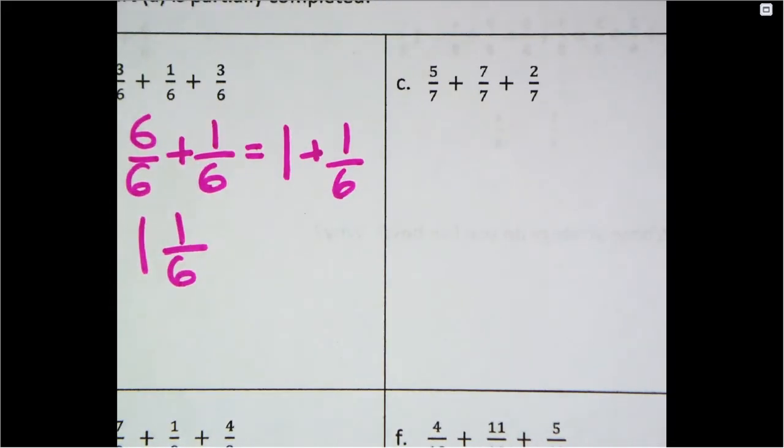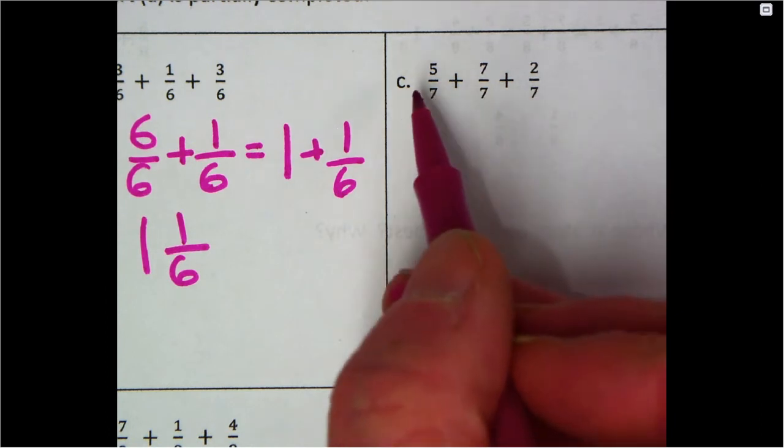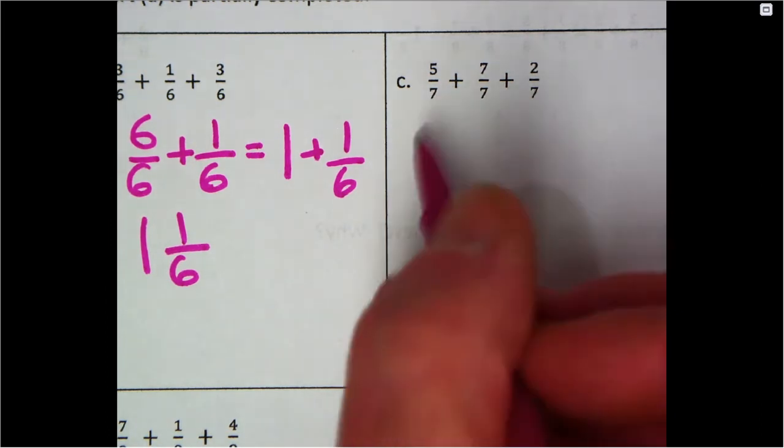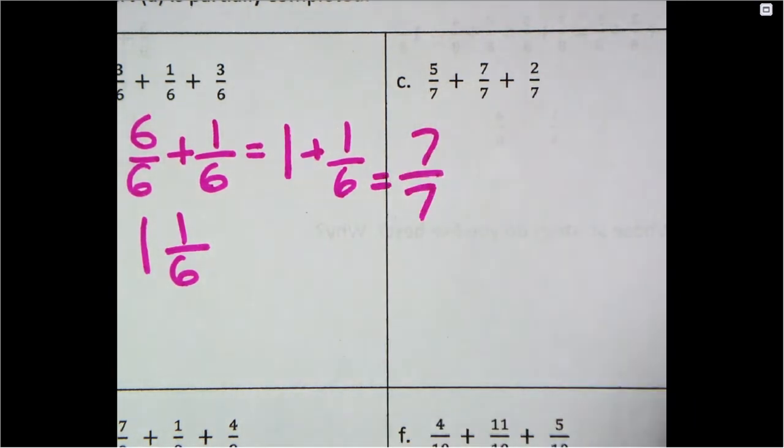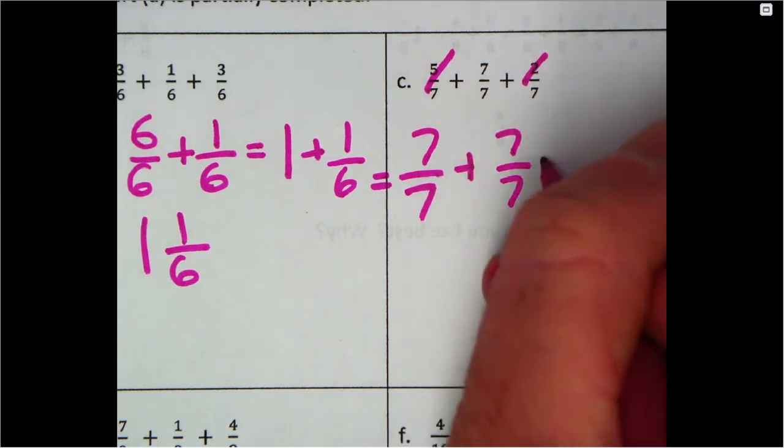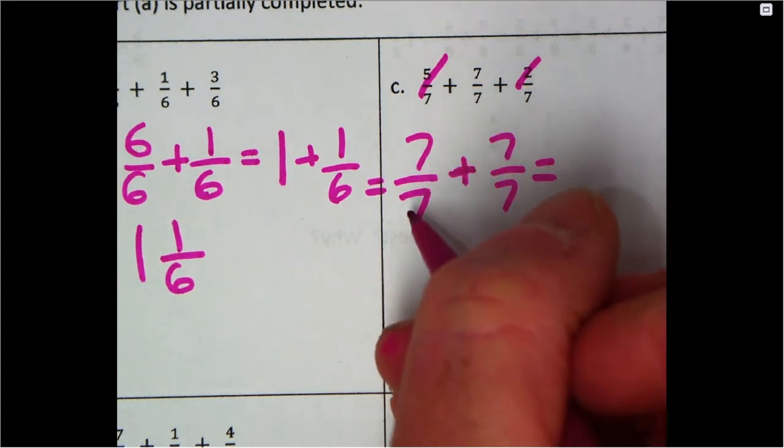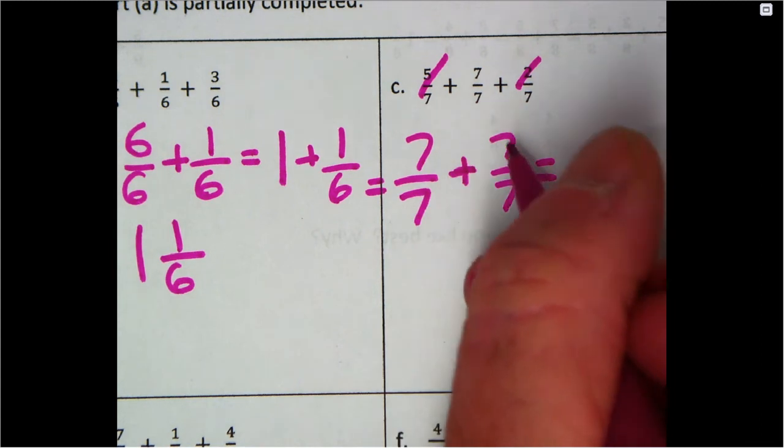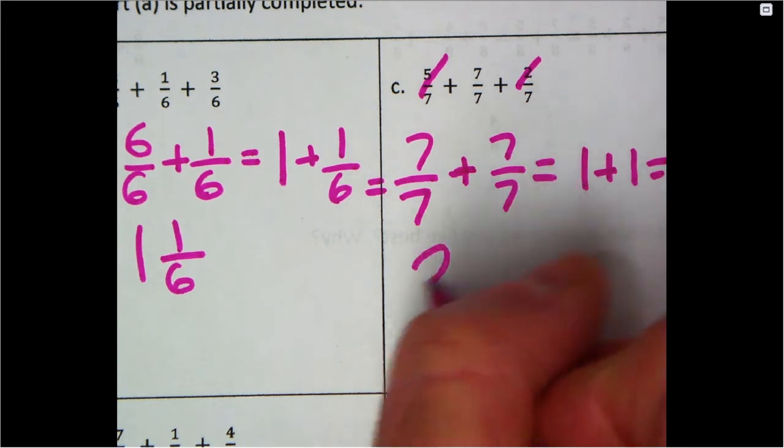What could equal 7 here? Well, I know 5 + 2 is 7, so 5/7 + 2/7 is 7/7. That's what this equals, plus what? We did the 5/7 and the 2/7, so we're left with 7/7. We have 7/7 + 7/7. We know that 7/7 is one whole and 7/7 is one whole, so it's simply 1 + 1 equals 2.